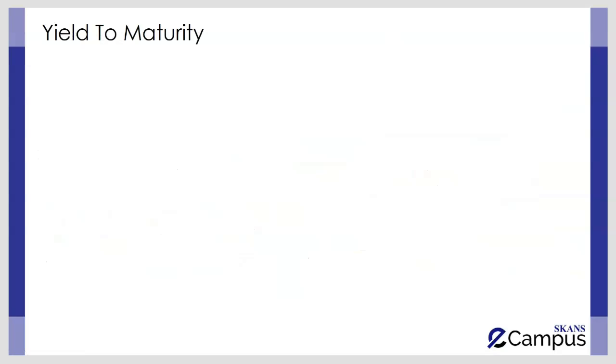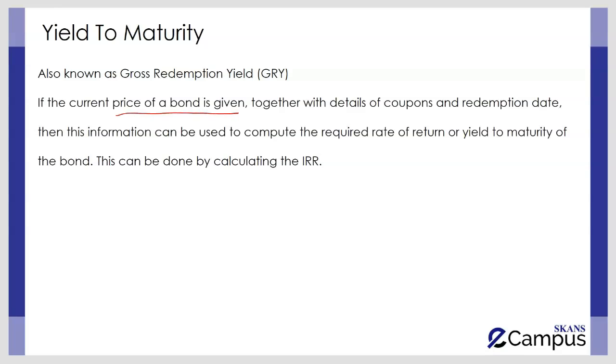Another important topic that may be asked in the question is yield to maturity. This yield to maturity is also known as gross redemption yield. So either they ask you to estimate the gross redemption yield or to estimate the yield to maturity; both will be considered the same. So if the current price of the bond is given and we also know the details of the coupon and redemption value, then this information can be used to estimate the required rate of return, also known as yield to maturity. And this can be done by calculating the IRR.